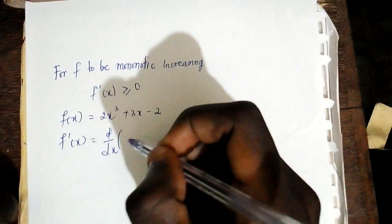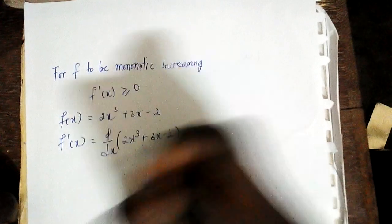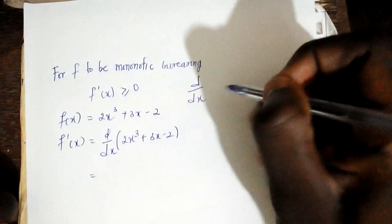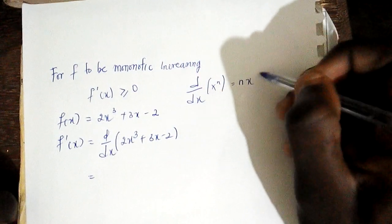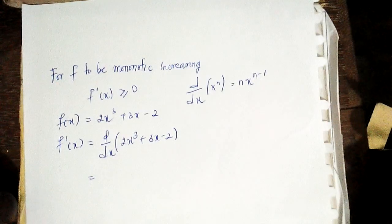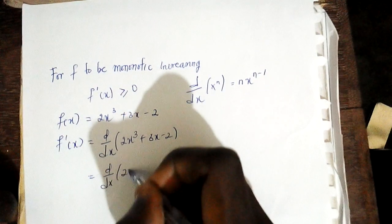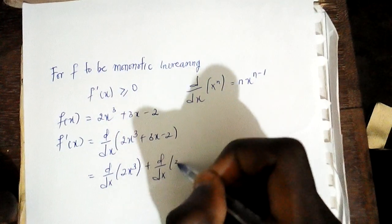Generally, if I differentiate the function x^n, I drop the power and take x raised to the power n-1. So we need the derivative of 2x³ plus the derivative with respect to x of 3x plus the derivative with respect to x of -2.